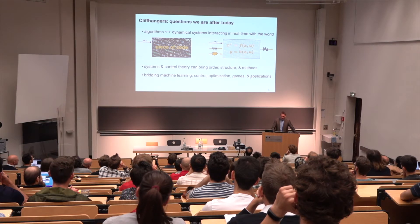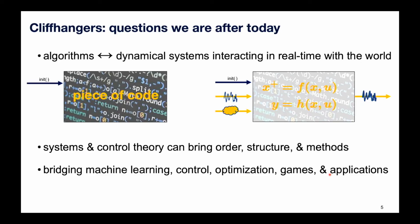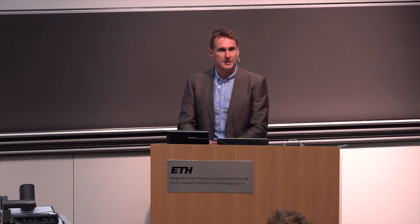These are some of the motivations for the theme of today. I want to leave some cliffhangers — some provocative questions we're after. The first bold claim: are algorithms just dynamical systems? Algorithms are not just a piece of code; they are discrete time dynamical systems that interact with the environment and with the world. You could take that viewpoint and see what we can do with it.